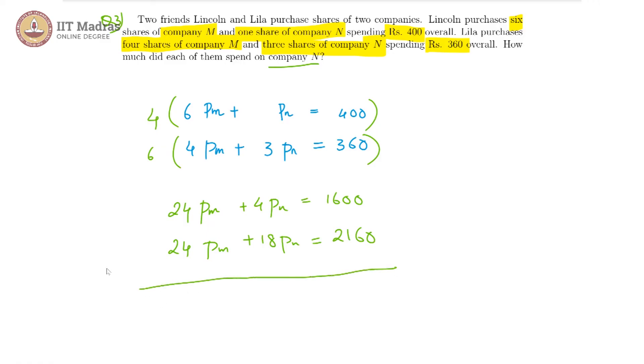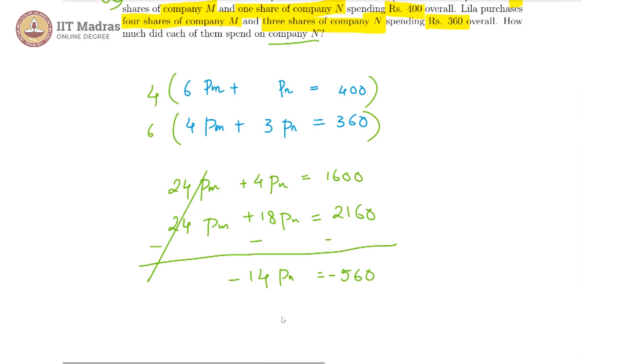So now if we subtract the second equation from the first, we get these two cancelling off and here we get minus 14 PN is equal to negative 560, and this indicates that PN is equal to 560 by 14, and that is equal to 40.